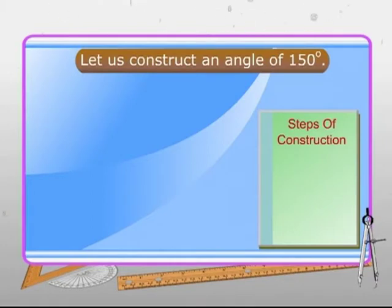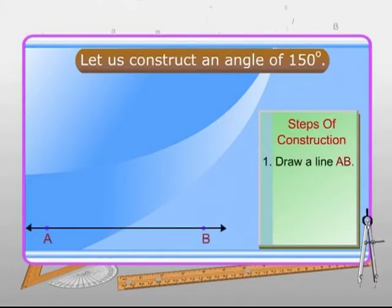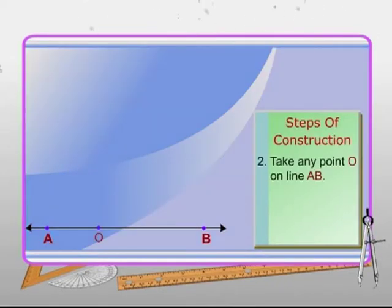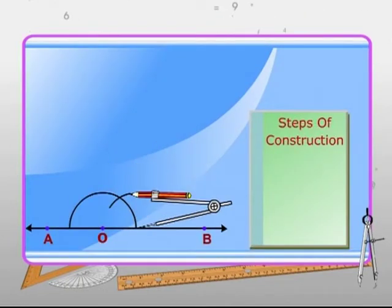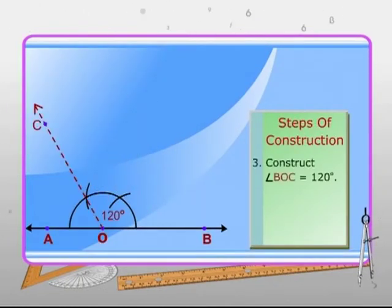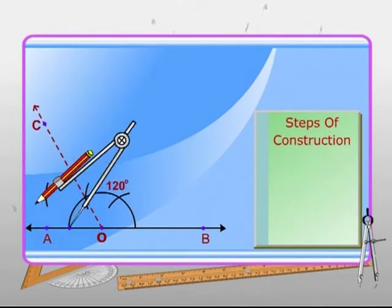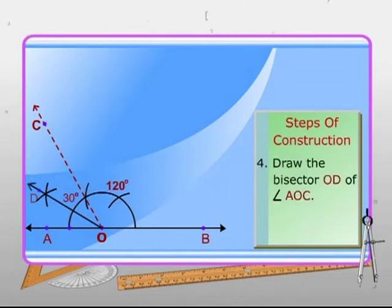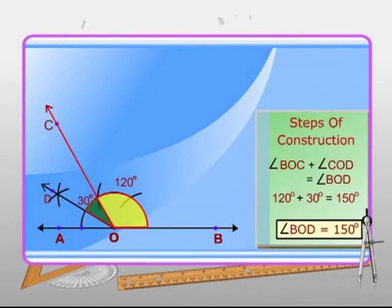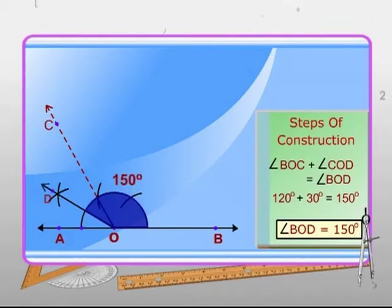Now let's construct an angle of 150 degrees. First, draw a line AB. Then take any point O on line AB. From point O, construct an angle BOC equal to 120 degrees by taking two consecutive arcs. Now draw the bisector OD of angle AOC. The sum of angle BOC and COD is equal to angle BOD, that is 120 degrees plus 30 degrees, which is equal to 150 degrees. Thus, angle DOB is the required angle measuring 150 degrees.